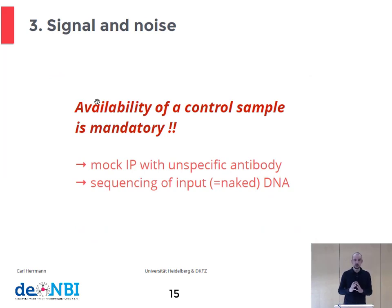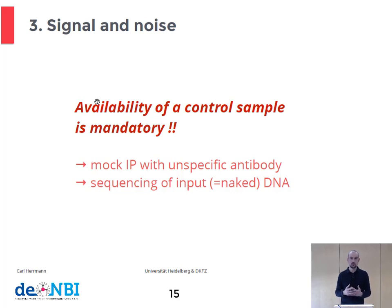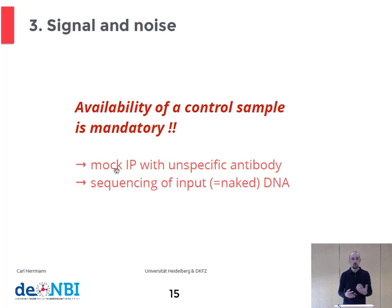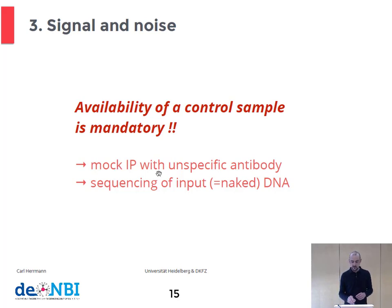The most important take-home message is that it is absolutely mandatory to have a reference data set — a control sample. There are several ways to generate control samples. For example, sometimes a mock IP is performed with an unspecific antibody and the result is used as a control, or simply naked DNA is sequenced. This is what we call the input, and it is the most standard method in current ChIP-seq analysis.